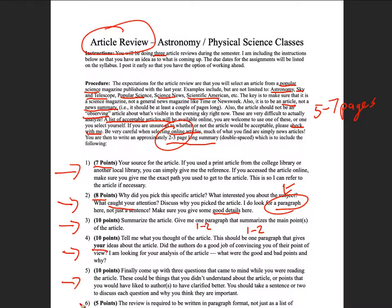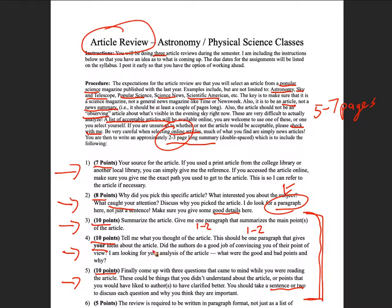Then I want you to come up with three questions — things you didn't understand, or something you would have liked the author to discuss more. Take a sentence or two to explain each question and why it's important. Note that summary, analysis, and questions are each worth 10 points, so don't write a long summary and then just a few sentences for analysis. Skimping on any of these will hurt your grade.